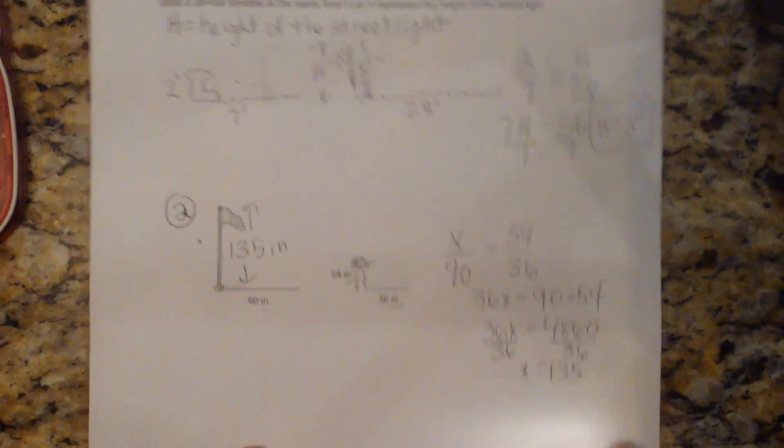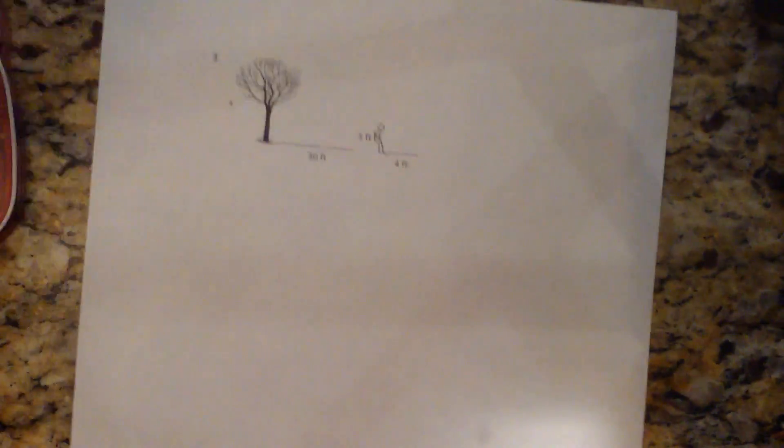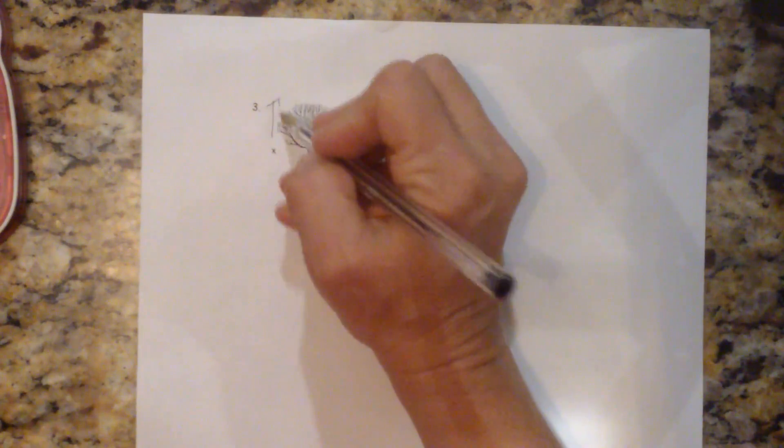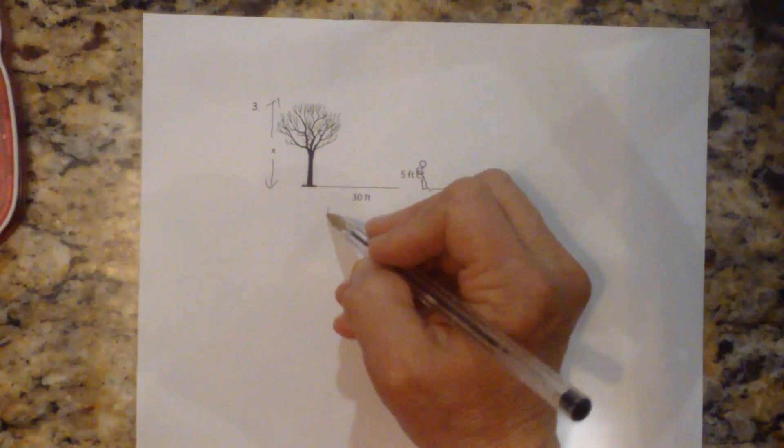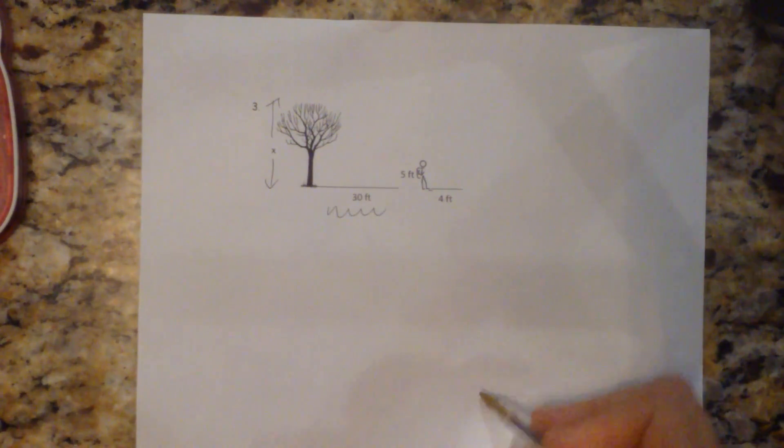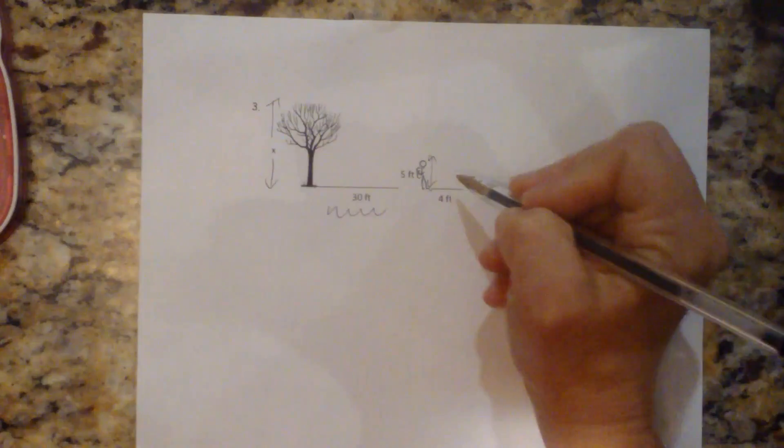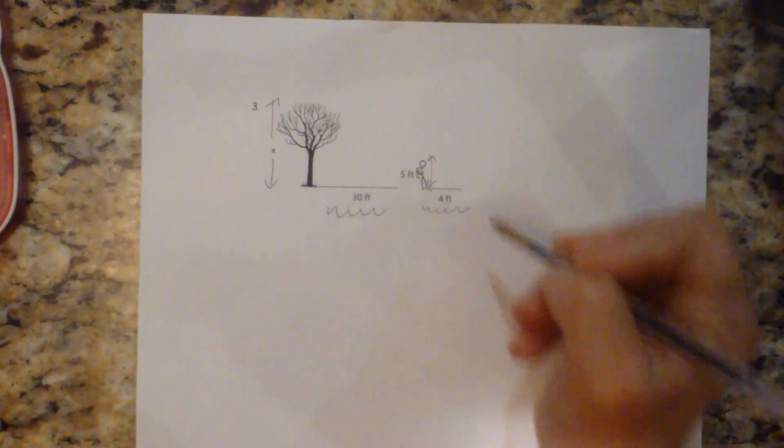Let's look at one more of these. Again, it's a diagram. We have a tree. We don't know the tree's height. But we do know the tree's shadow is 30 feet. We know this person is 5 feet tall, and the shadow is 4 feet.